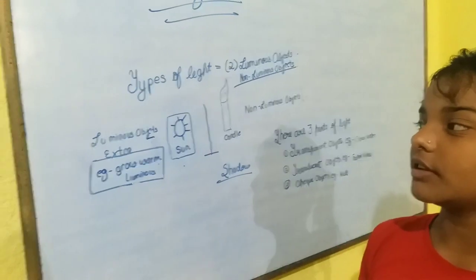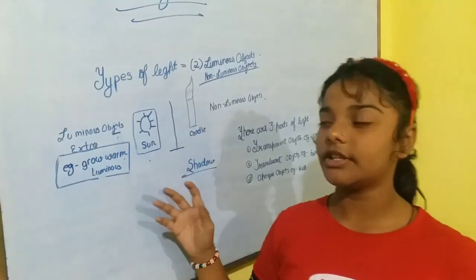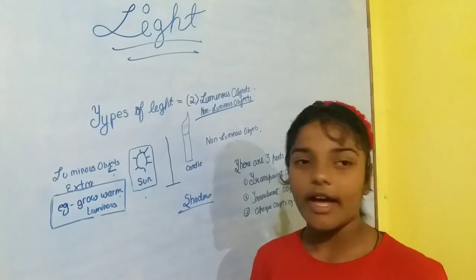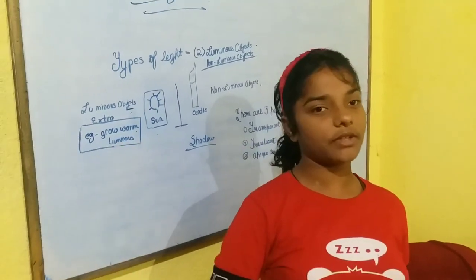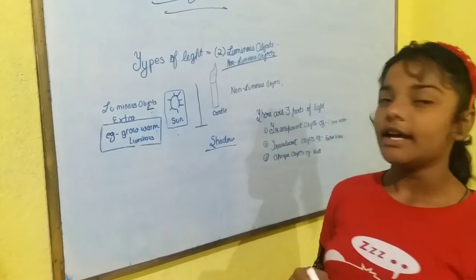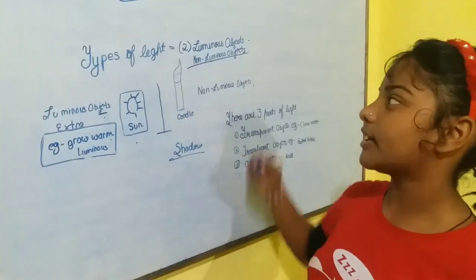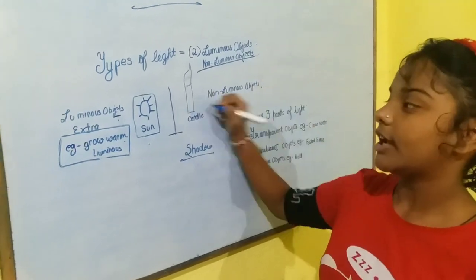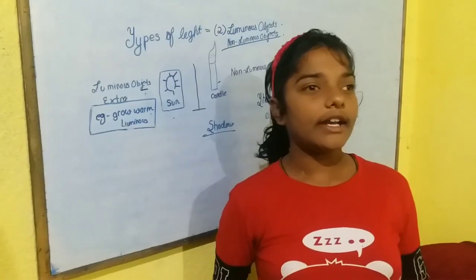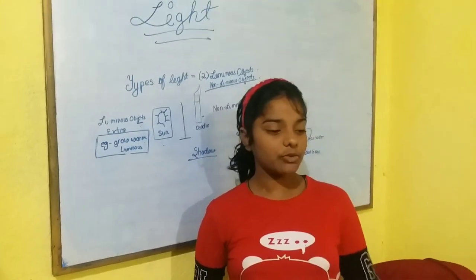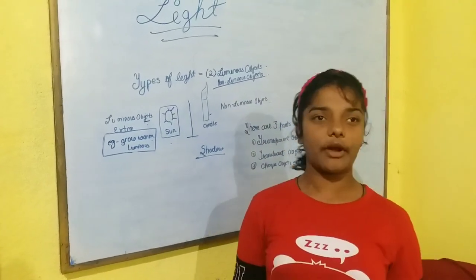You can see the sun is mentioned here. It gives its own light, by which we can get heat and sunlight. A candle is a man-made thing; it is not natural. So we count it in the luminous object. We use it to burn, and if you have no electricity at home, you can use it. It has a lot of advantages.